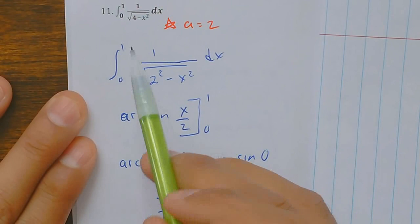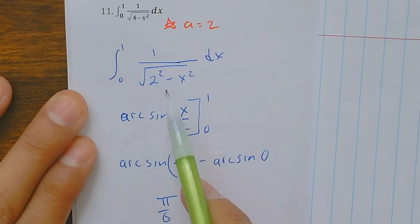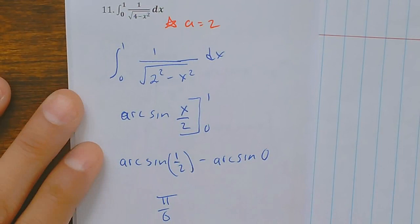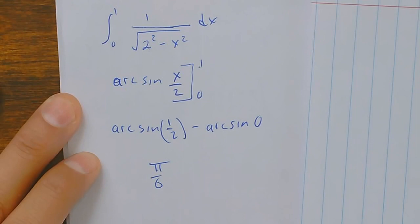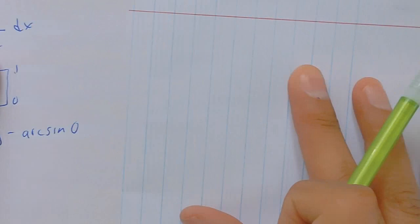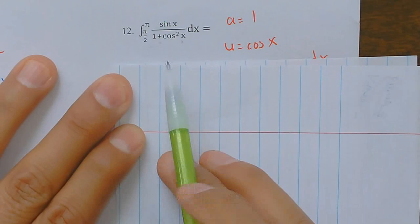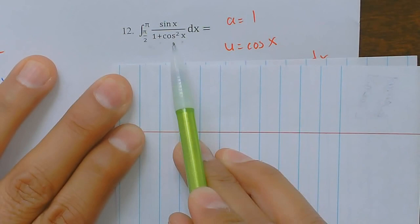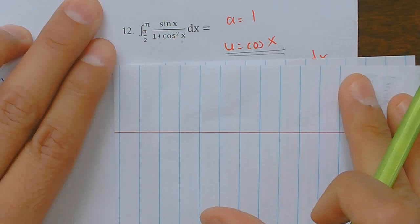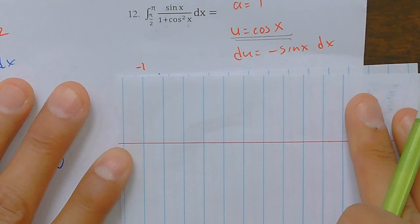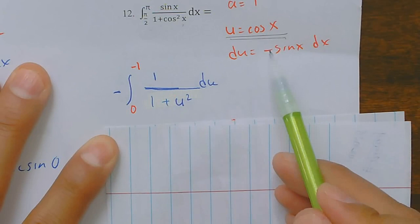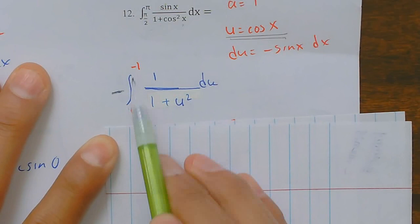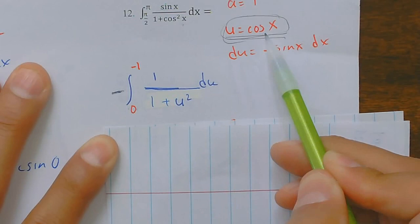Number twelve is where we caught some people. The a value squared is 1 and u is cosine, so because u is another function I need a u-substitution. The du is negative sine of x. Changing to u, I change my limits: at pi over 2, u equals 0; at pi, u equals negative 1. Because the limits are in the wrong order, I rewrote from negative 1 to 0 and made the sign positive. Plugging in top minus bottom gives pi over 4.